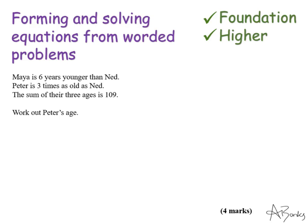So the first thing I'm going to do is I'm going to pick one of the three people to be my x value, my common value.